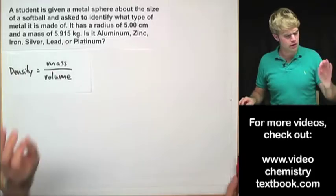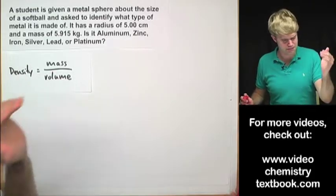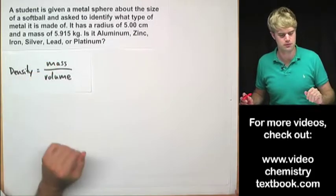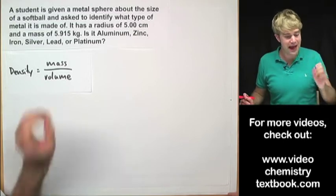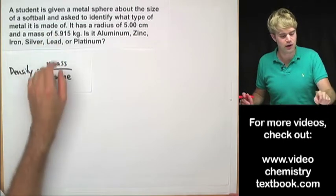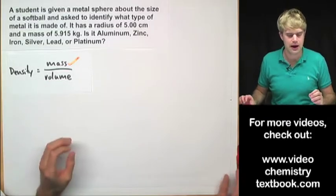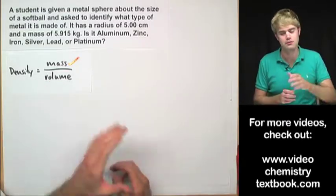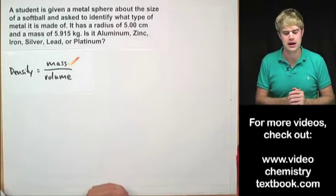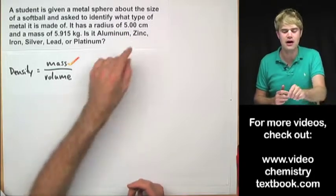So in order to get density, we're going to have to do the mass of the sphere divided by the volume of the sphere. The mass we know to be 5.915 kilograms. How do we get the volume? The problem doesn't tell us what the volume is. It only says that it has a radius of 5 centimeters.